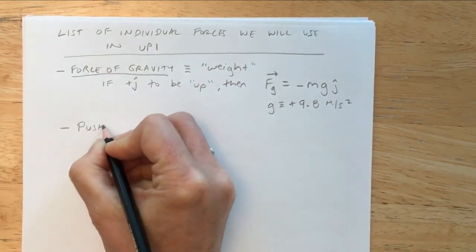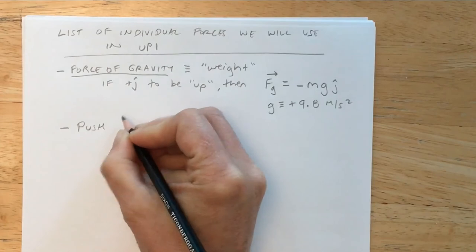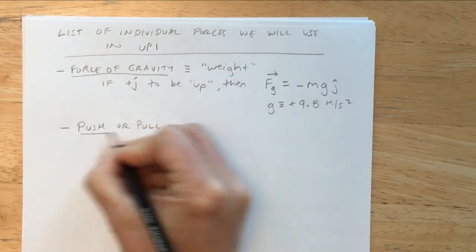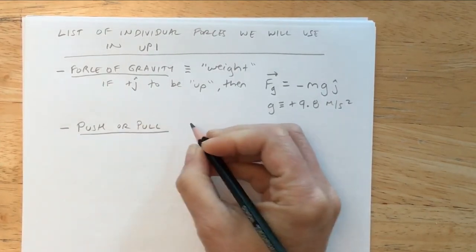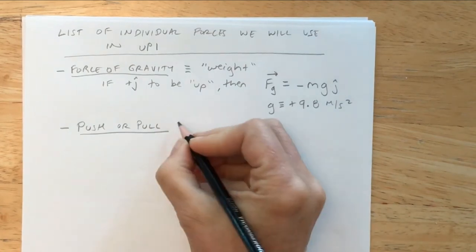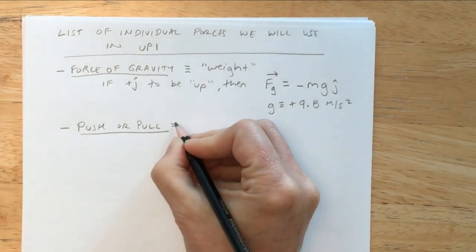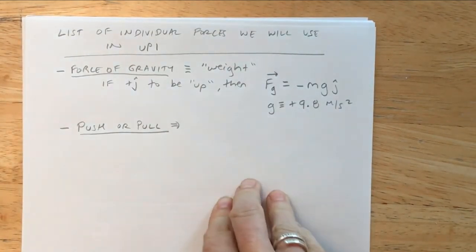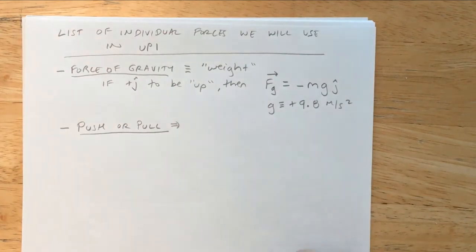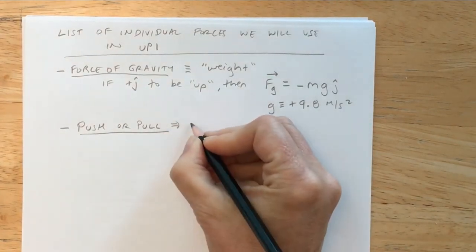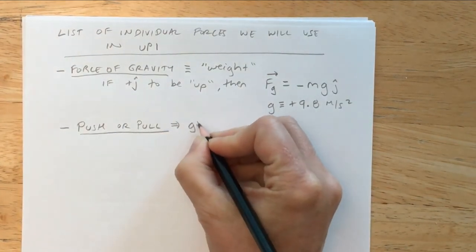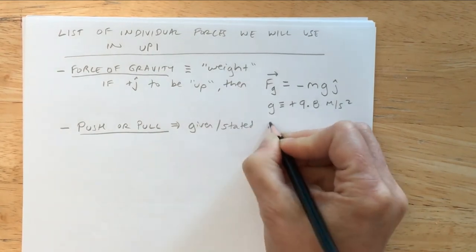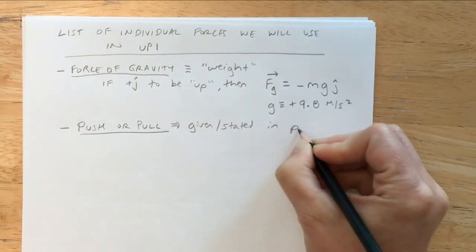The second type of individual force is a push or a pull. This is pretty obvious in a problem because the problem will say somebody's pushing on a box or pulling on a rope. So this will be given or stated in the problem.